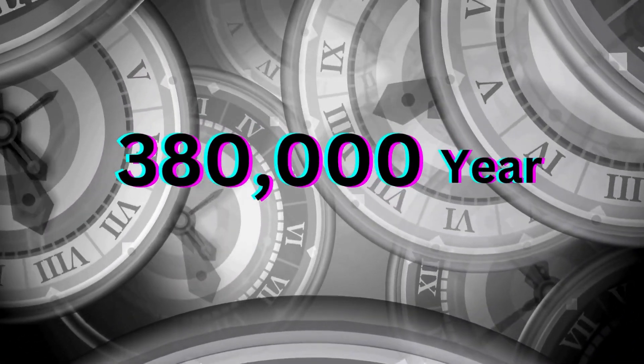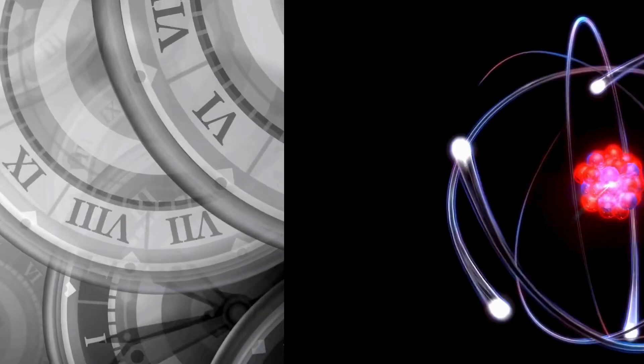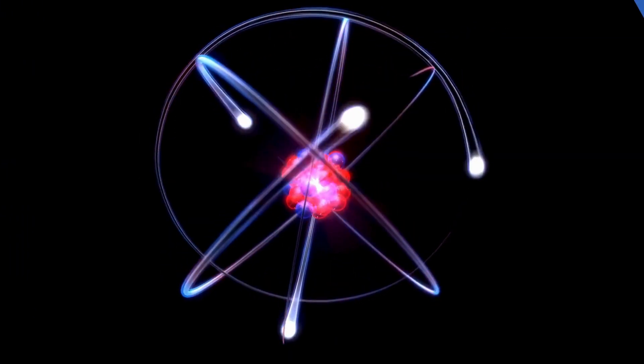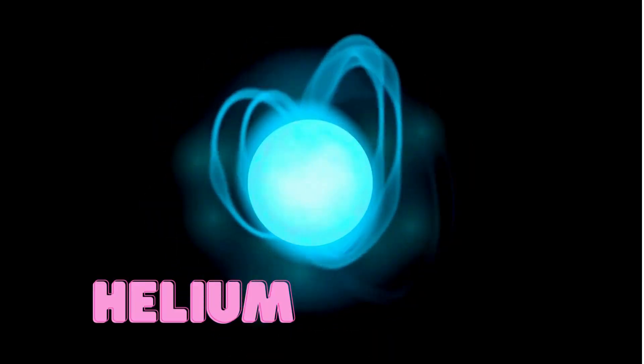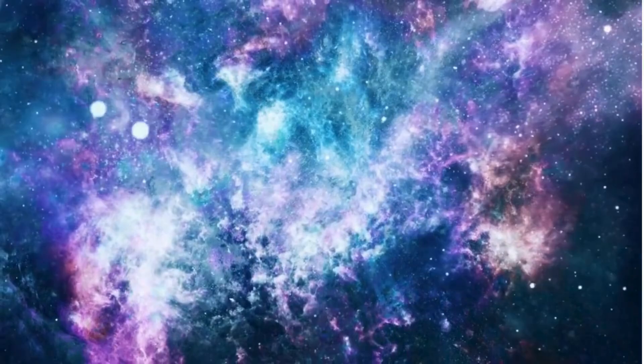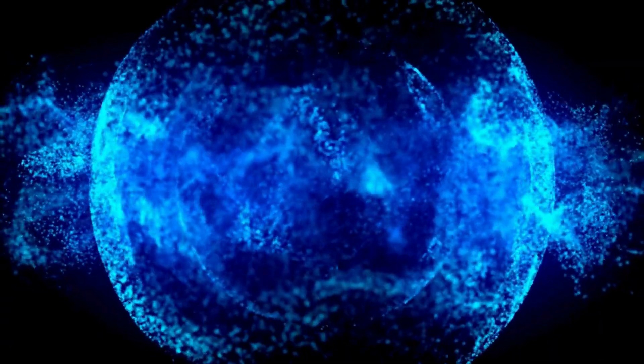It took almost 380,000 years for electrons to be trapped in orbit around the nucleus, forming the first atoms. And they were mainly helium and hydrogen atoms. They are still abundant in the universe. So there was a fundamental force which acted between electrons and nucleus.